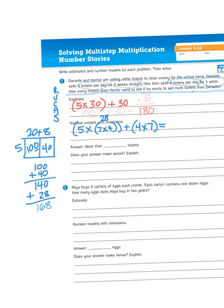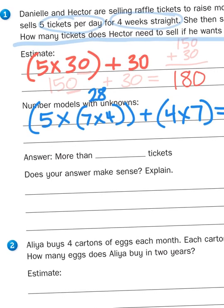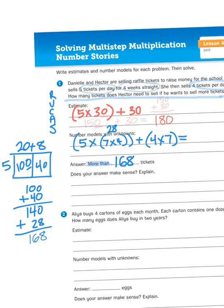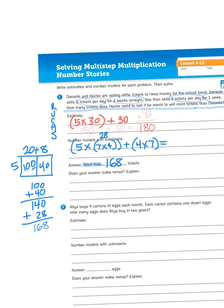And that's how I would solve that problem, figuring out how much Danielle sold. So Hector wants to sell more. He has to sell more than 168. So if he hit 169 tickets, then he would be the winner of this contest. But in reality, the school band is the winner for those two students being so adventurous and aggressive in their ticket selling.